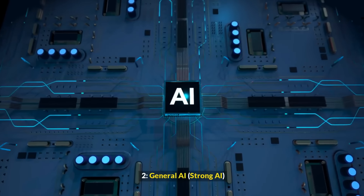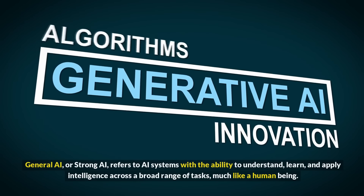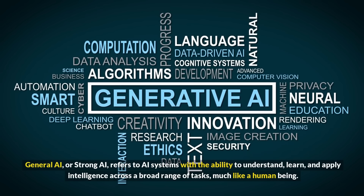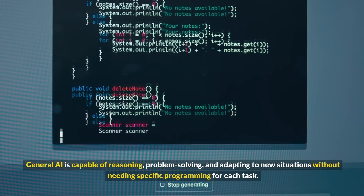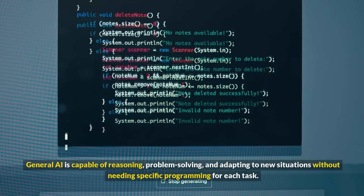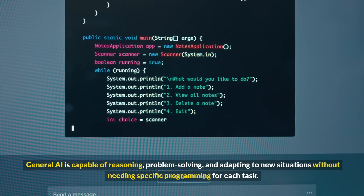General AI, or Strong AI, refers to AI systems with the ability to understand, learn, and apply intelligence across a broad range of tasks, much like a human being. General AI is capable of reasoning, problem-solving, and adapting to new situations without needing specific programming for each task.